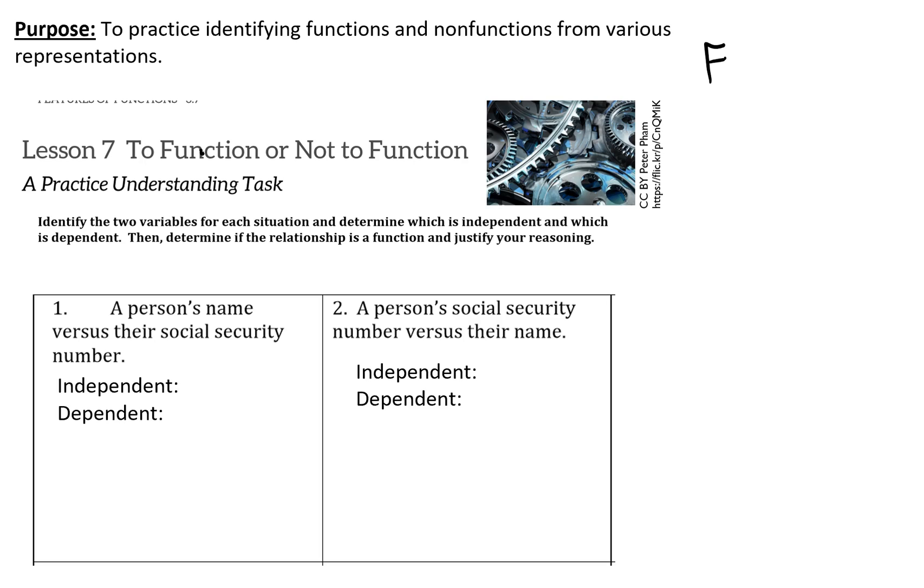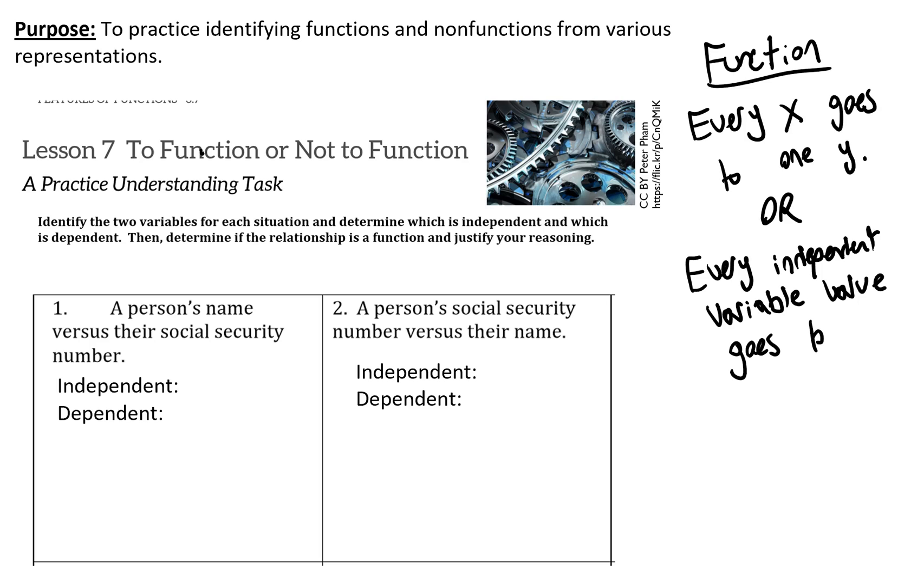To do that we're also going to have to discuss independent and dependent variables. So let's remember our definition of a function which is that every x must go to one y. So for this exercise it's going to be helpful to think about how every independent variable value goes to one dependent variable value. That's an alternative definition of function that replaces x with independent variable and y with dependent variable to help us for this task.